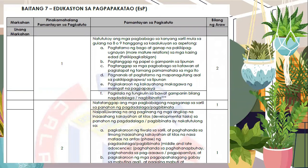This is an example of a budget of work, specifically for ESP or Edukasyon sa Pagpapakatao. As you can see, with respect to the MELCs — or the pinakamahalagang pamantayan sa pagkatuto — it is a continuous numbering. This means that when the first quarter ends, the counting does not stop or reset for the second quarter. It is continuous numbering of our most essential learning competencies across all quarters.